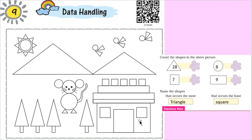After this, you have to find what is the name of the shape that occurs the most—that is triangle—and that occurs the least, which means the smallest number of these shapes. After doing this simple observation, you can do data handling and learn what it is.